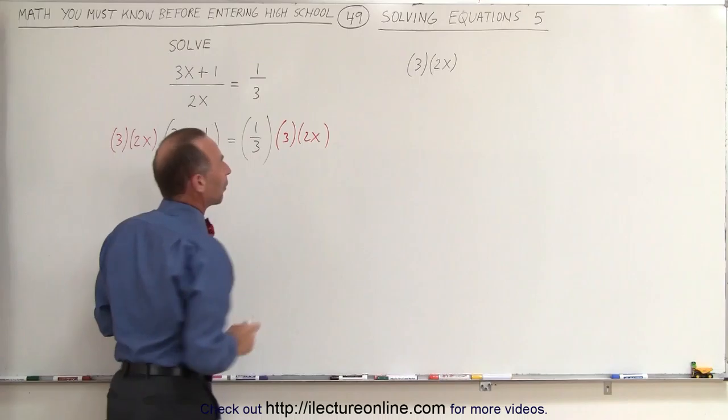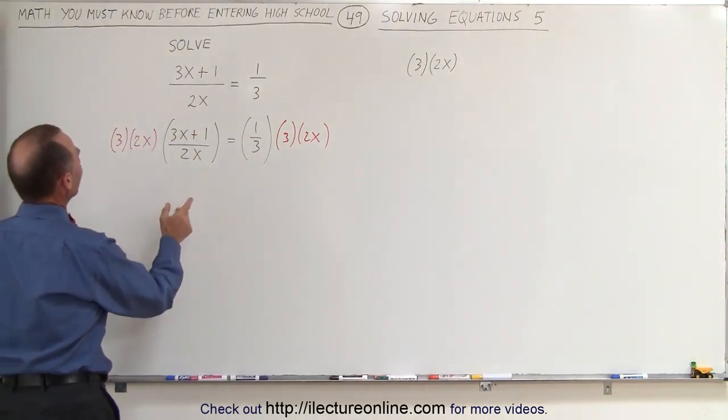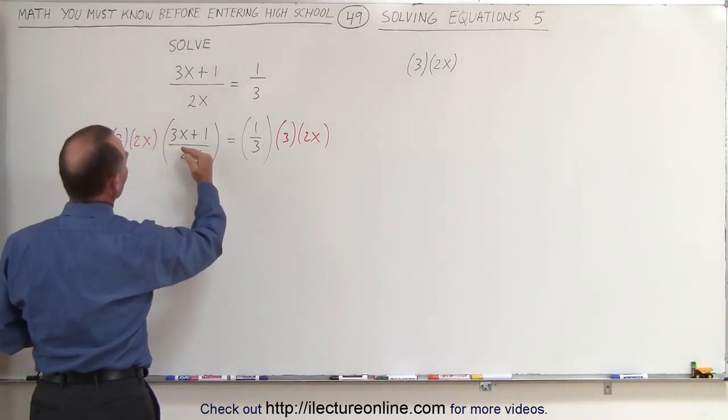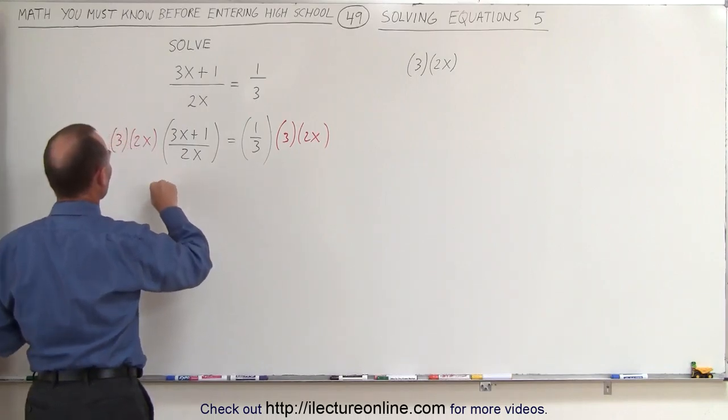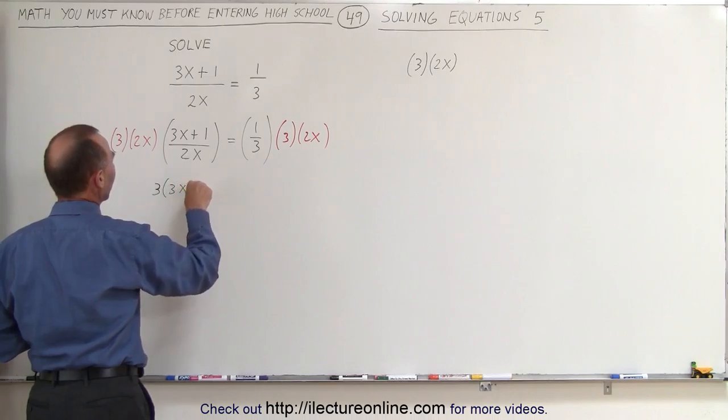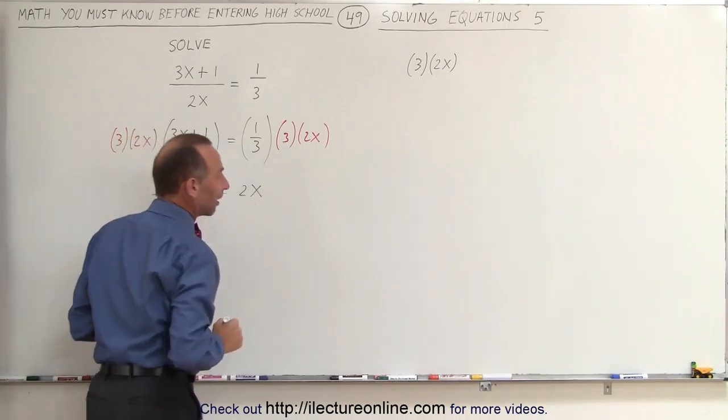Of course, the reason why I wrote that instead of 6x, it makes it easier to see how this works. First of all, on the left side, we'll multiply this times this. Notice the 2x's will cancel out, and we're left with 3 times 3x plus 1. So this becomes 3 times 3x plus 1 on the left side. On the right side, the 3s cancel out, and we end up with 2x on the right side.